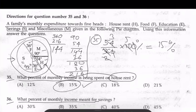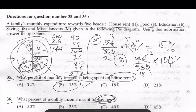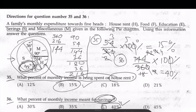This question asks: what percent of monthly income is meant for savings? Same method — savings total is 144 degrees. So 144 out of 360 into 100%, cancel and simplify, gives 40%. Our answer is C, 40%.